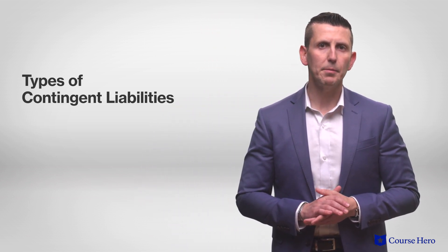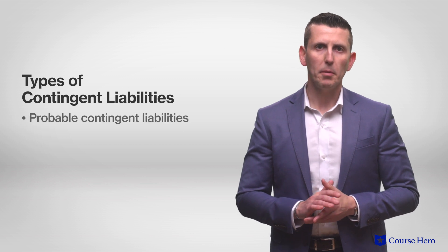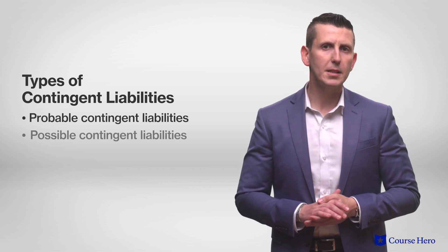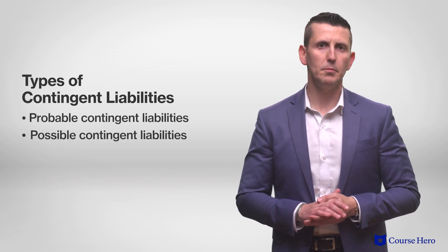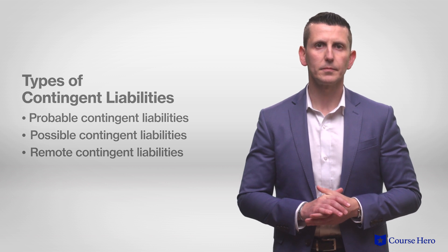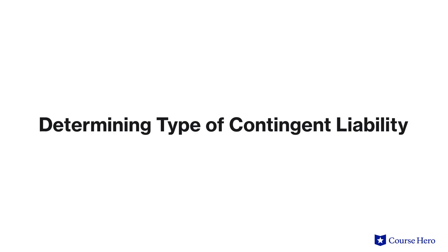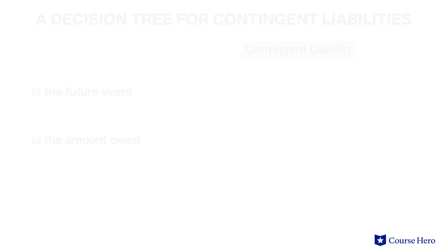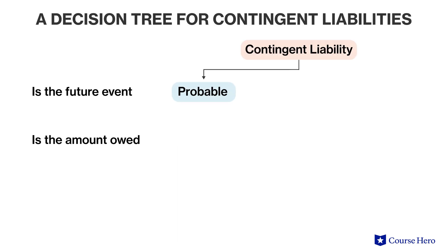There are three different types of contingent liabilities: probable contingent liabilities, possible contingent liabilities, and remote contingent liabilities. Each type comes with different rules on what to report and how to report it.